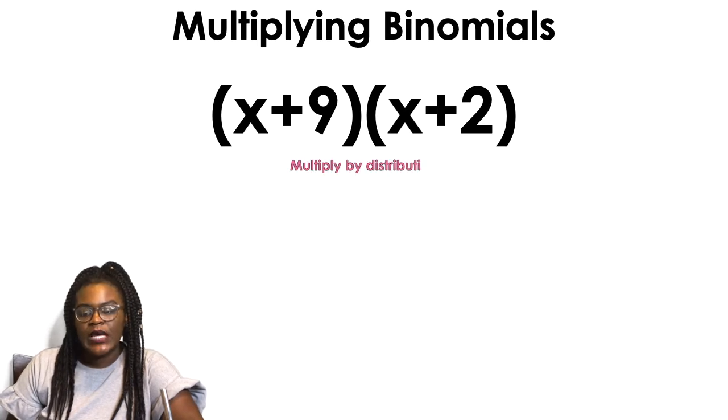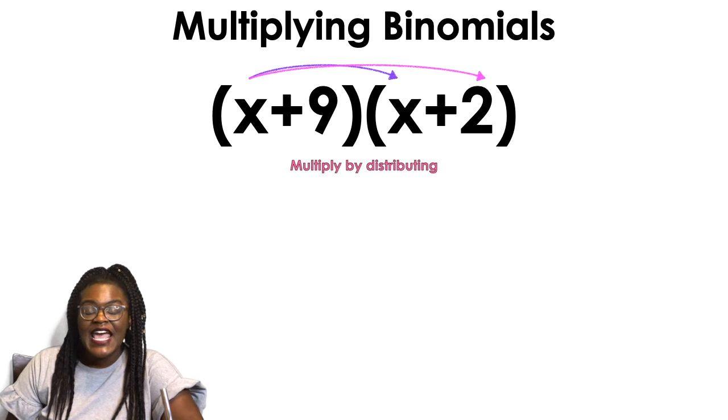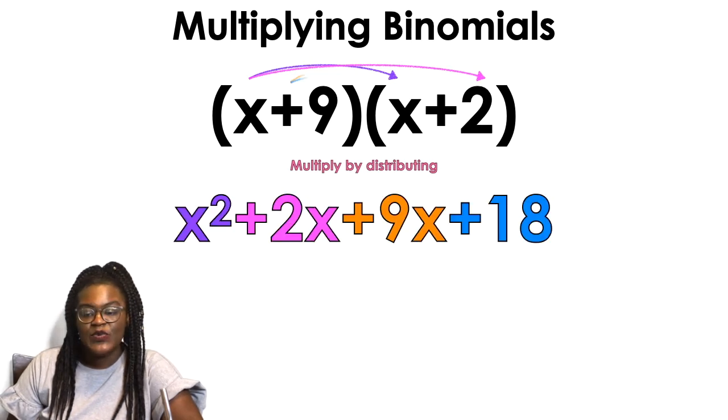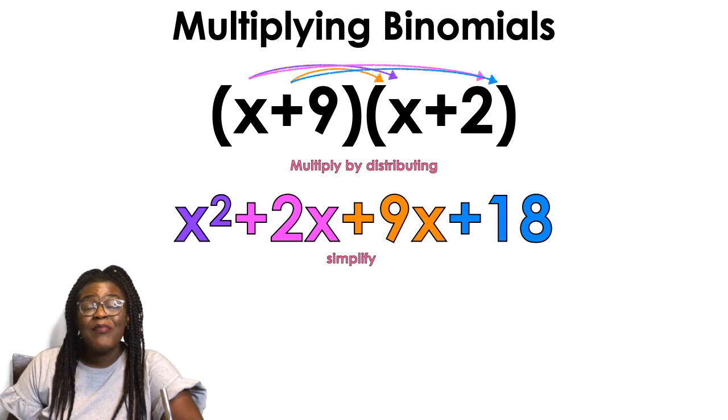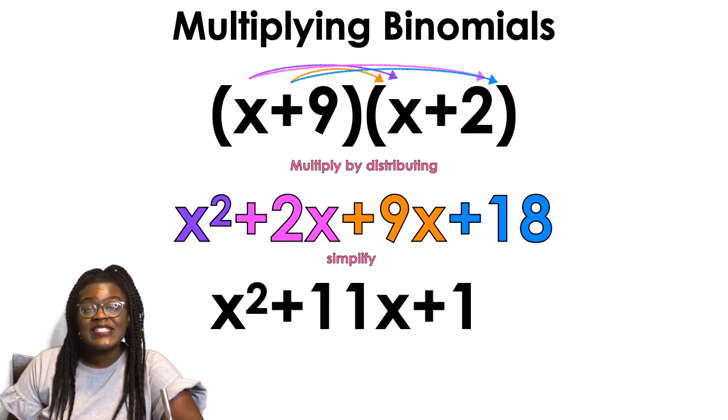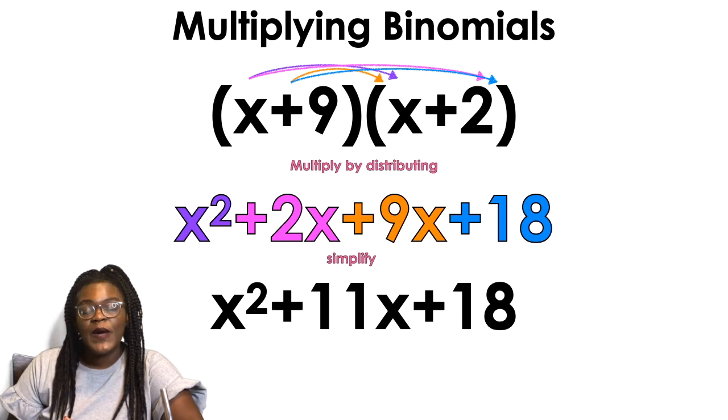Multiplying binomials. You want to multiply by distributing. So you want to do x times x, and then x times 2. That's gonna give you x squared and 2x, and then you want to do 9 times x and 9 times 2, which is gonna give you 9x plus 18. In the middle, you want to simplify by combining the like terms, and 2 plus 9 equals 11. Ba-da-bing, ba-da-boom, baby. That is your answer.